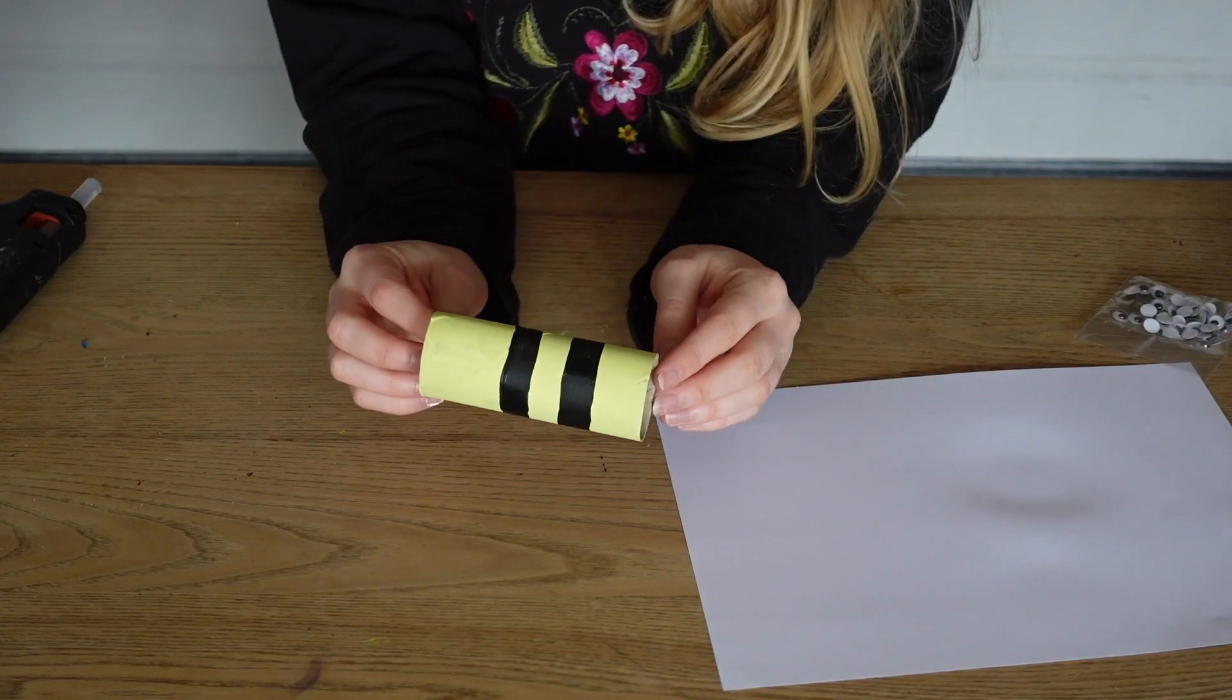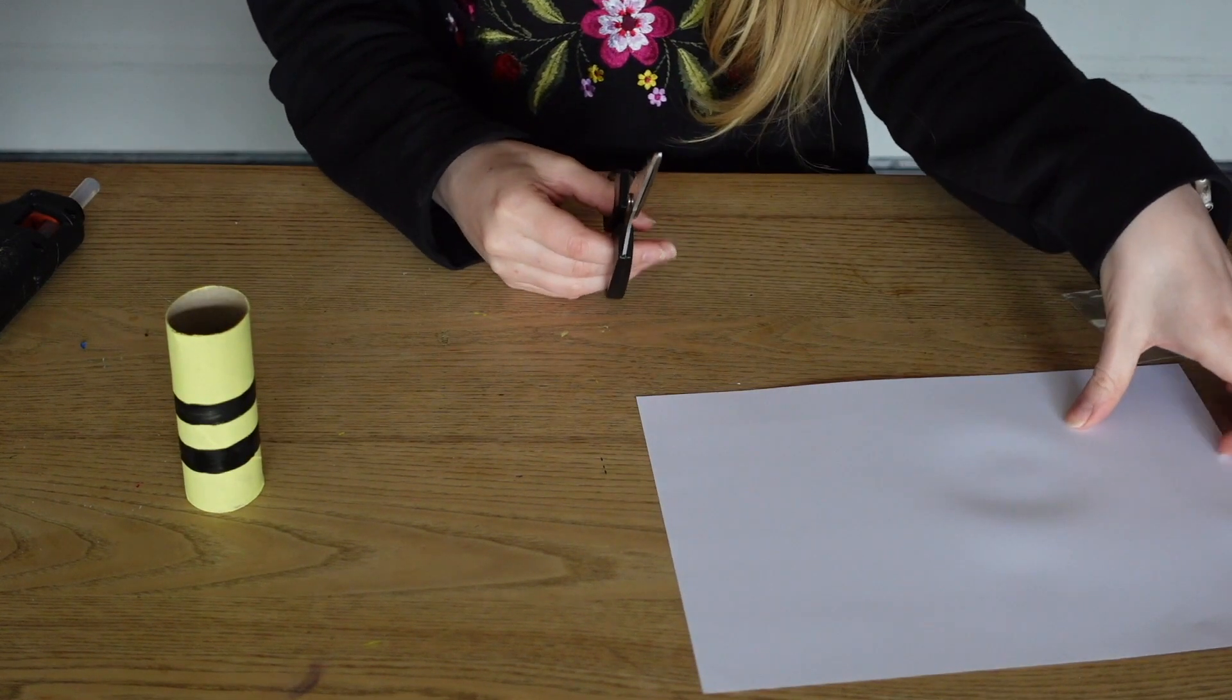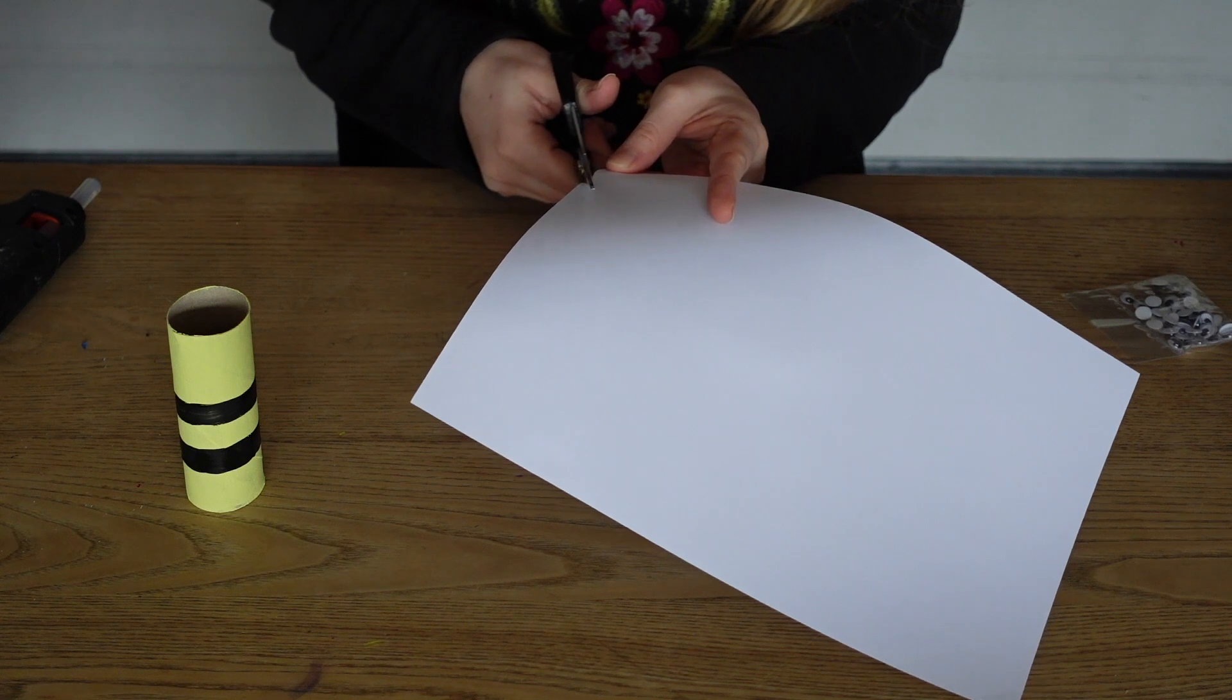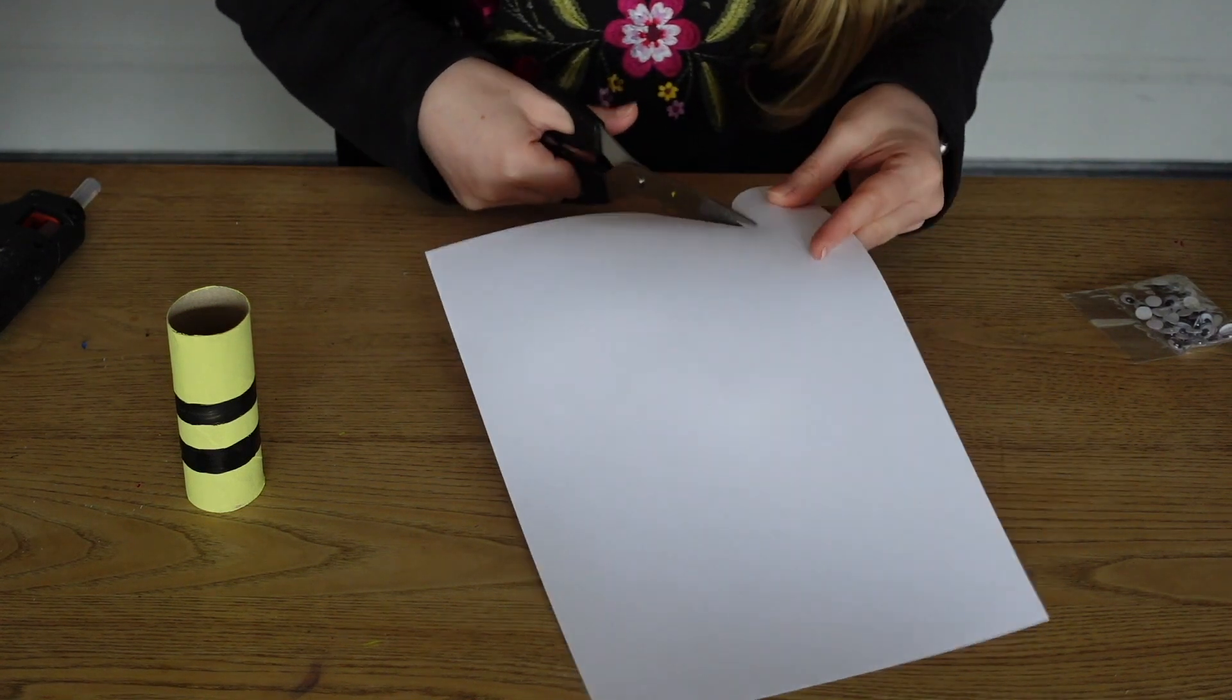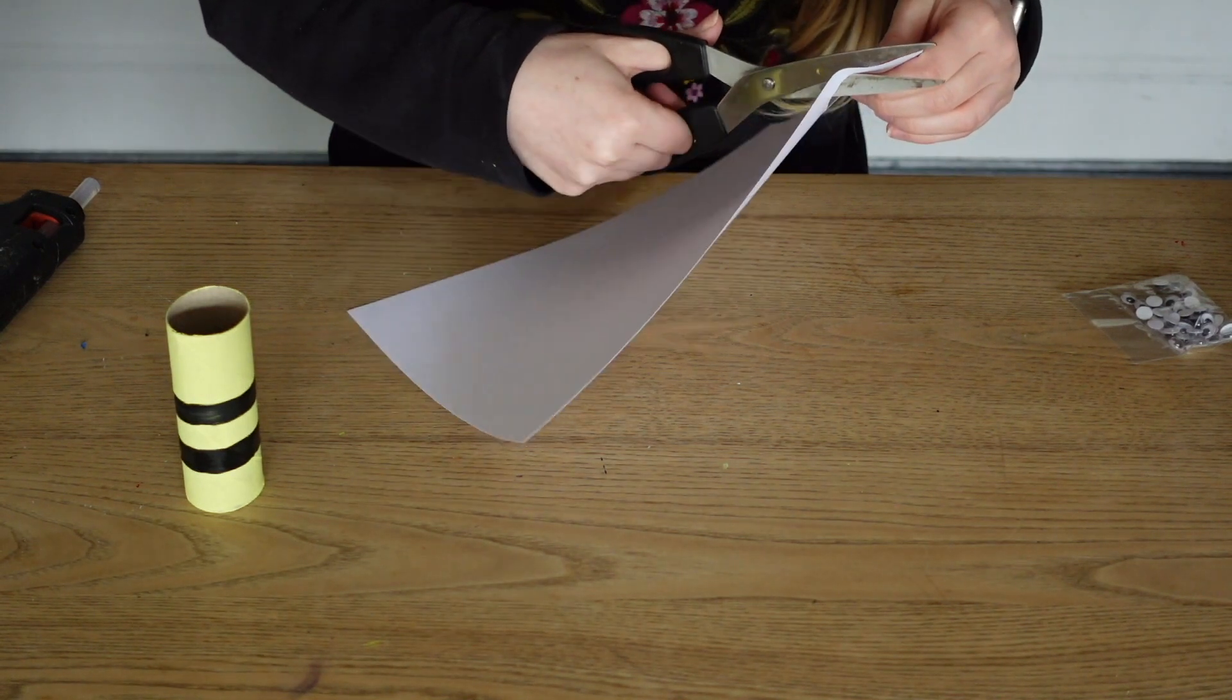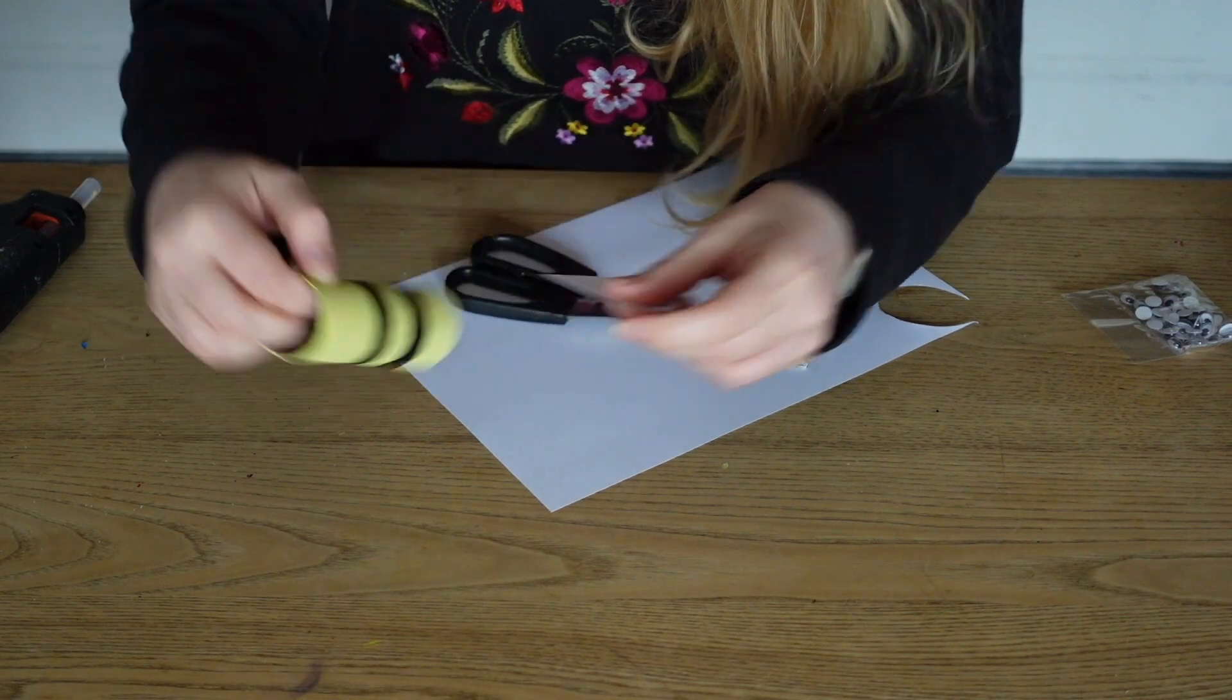So welcome back, our bumble bee is now nice and dry, or almost dry. So what I'm going to do is I've got some white card here and I'm going to cut two little wings out of it. They don't need to be matching but you can draw around the other one if you want to make them. So just size it up and make sure, yep there's one.